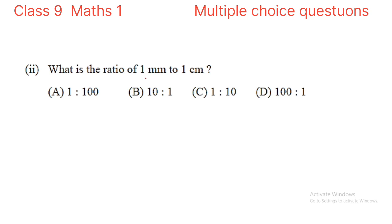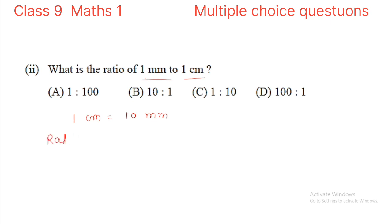We have to express these terms in the same unit to write their ratio. Since 1 cm is equal to 10 mm, we can substitute: the ratio of 1 mm to 1 cm becomes 1 mm to 10 mm, which simplifies to 1 is to 10. So option C is the correct alternative.